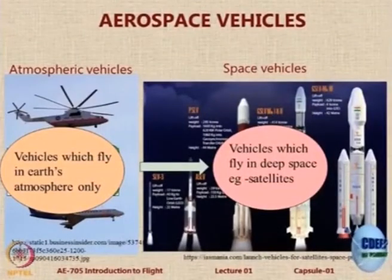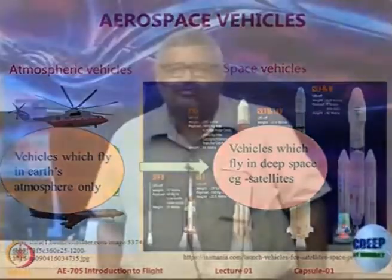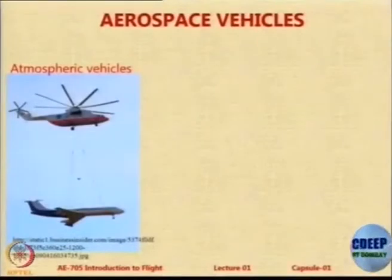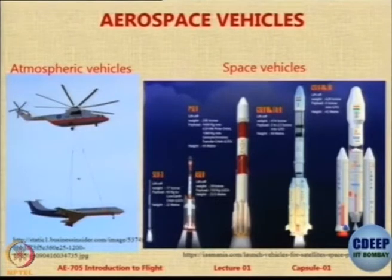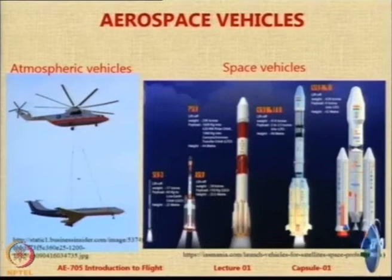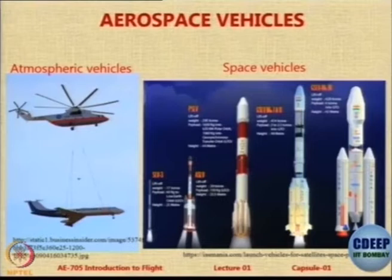Let us look at aerospace vehicles generally — there are two basic kinds. One kind operates in our atmosphere, basically the lower atmosphere: helicopters, fixed-wing aircraft, and similar vehicles. In outer space beyond about 100 kilometers, we start looking at space vehicles. Broadly speaking, up to 100 kilometers from earth could be considered part of the atmosphere, although aircraft never fly beyond 20–22 kilometers except for a few exceptions.